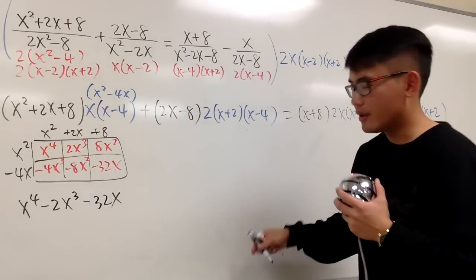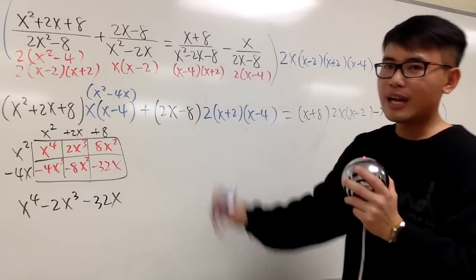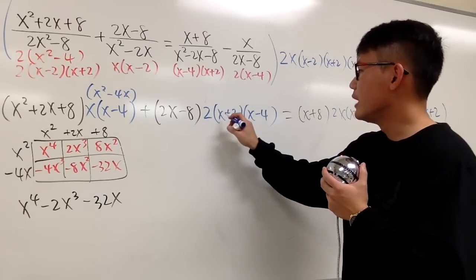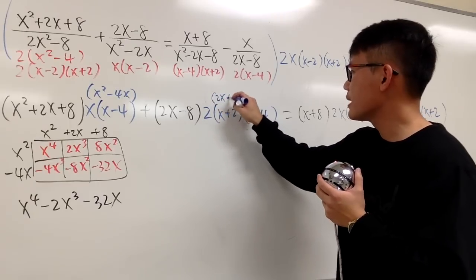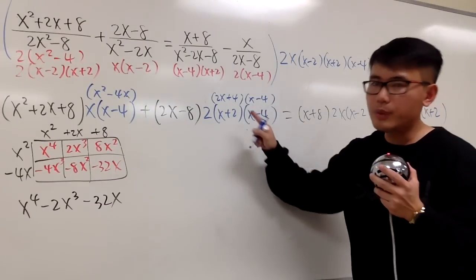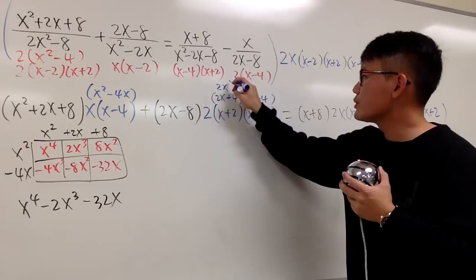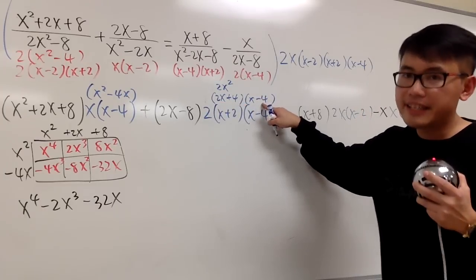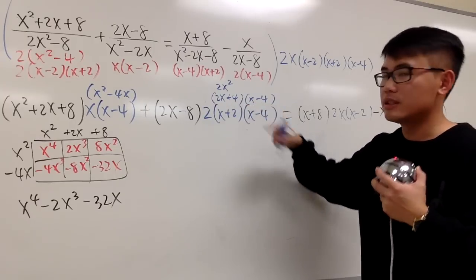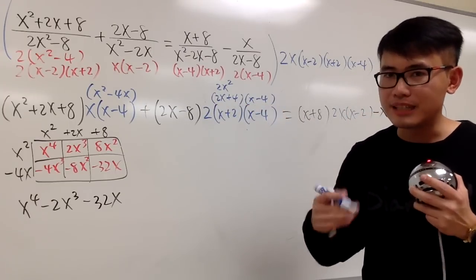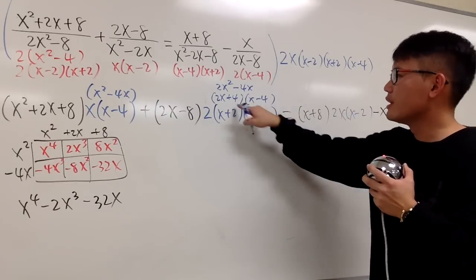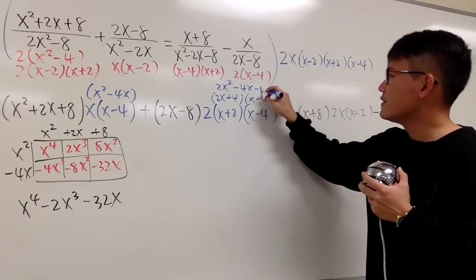Moving on to this right here. I'm going to keep this in black. I'm going to multiply this out first. 2 times (x plus 2) is going to give us 2x plus 4. And then I will take this times that. So right here: 2x times x is going to give us 2x to the second power. And then 2x times negative 4 is going to give us negative 8x. But then here we have 4 times x is 4x. Therefore, negative 8x plus 4x is negative 4x. We combined it in the middle already. Lastly, we have 4 times negative 4, that's negative 16.